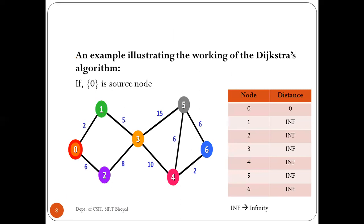This is an example showing how the Dijkstra algorithm works on a source node. In this example, we have seen around seven nodes, marked from zero to six — zero, one, two, three, four, five, six. These are all the nodes. Node zero is known as the source node, and the remaining nodes are our destination nodes, from which we can find the shortest path from the starting source node.